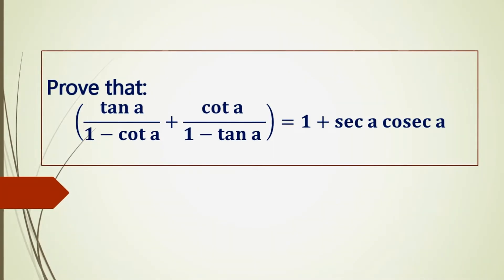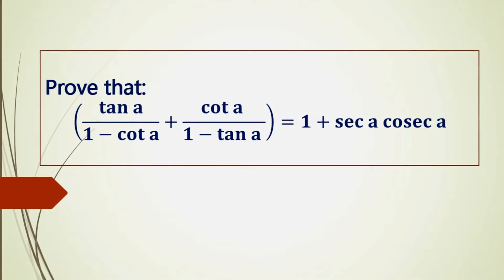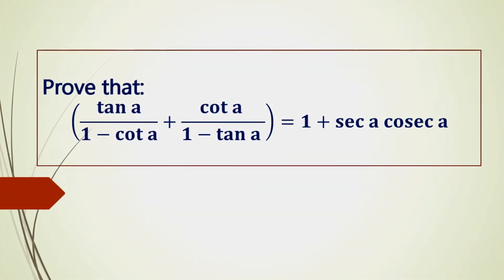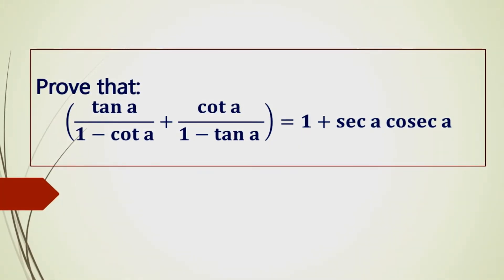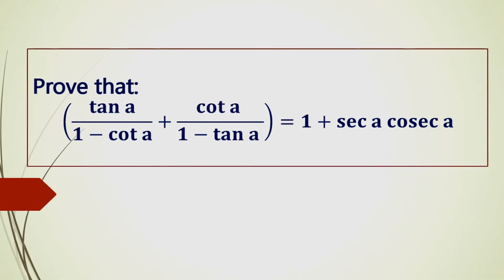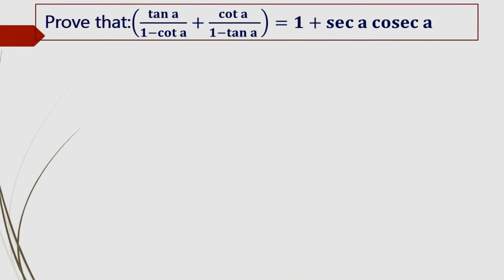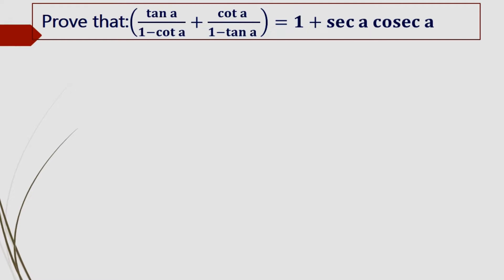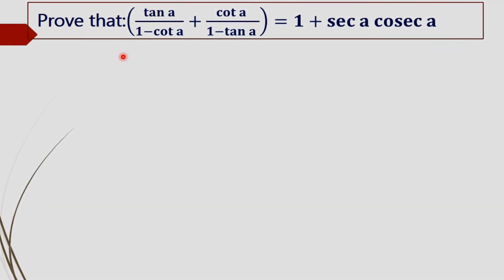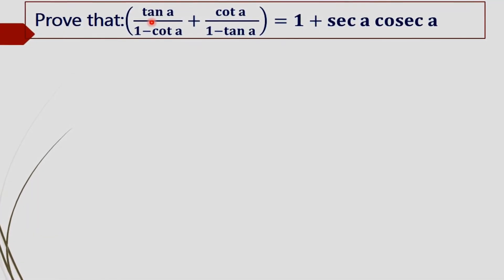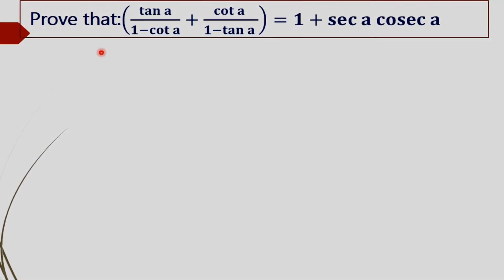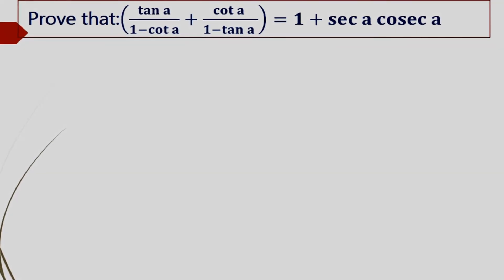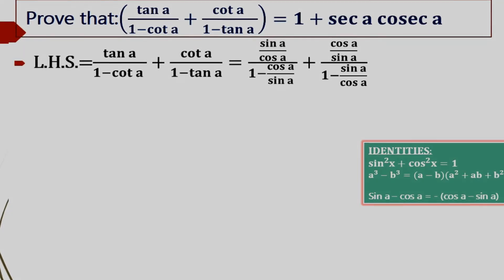In trigonometry, prove that tan A divided by (1 minus cot A) plus cot A divided by (1 minus tan A) equals 1 plus sec A cosec A. We have to prove the LHS of the given equation is equal to the RHS. So first we take the LHS: tan A / (1 - cot A) + cot A / (1 - tan A).